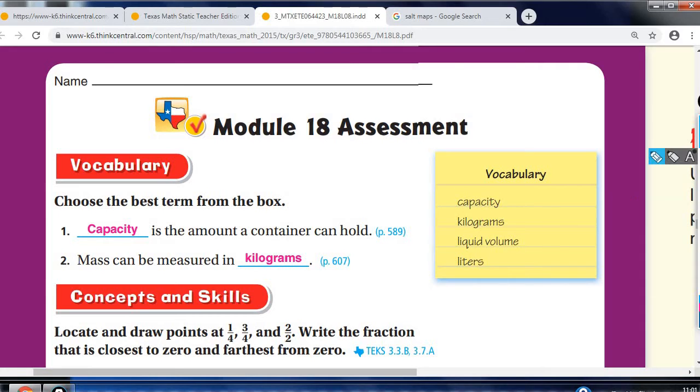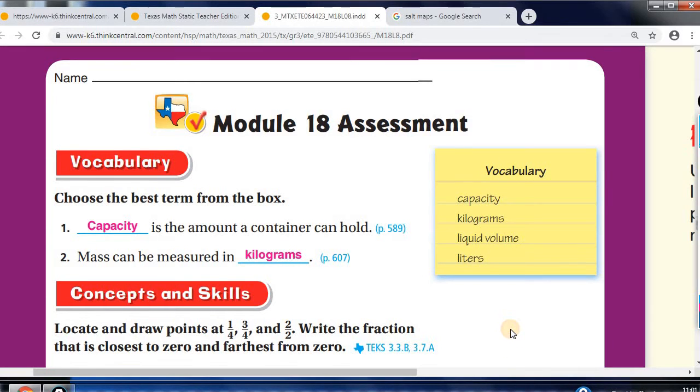I'll walk you through this. What is the capacity? Capacity is the amount a container can hold, and it gives you the page number where you found the answer. And mass, we just did that one, can be measured in kilograms. Now, it could also say grams here, but you don't have grams as one of your choices here. So that's why that's that answer. Because I get this one a lot. It's grams also. Yes, it is grams, but they don't give you that choice here.